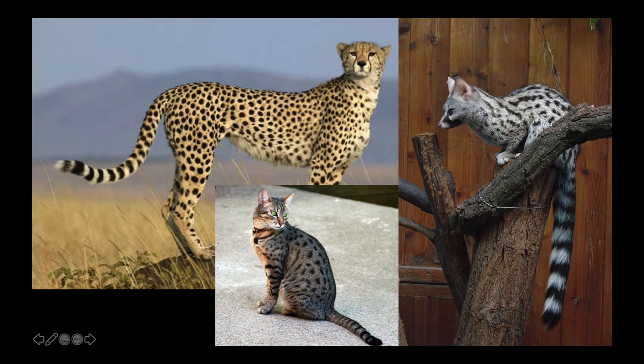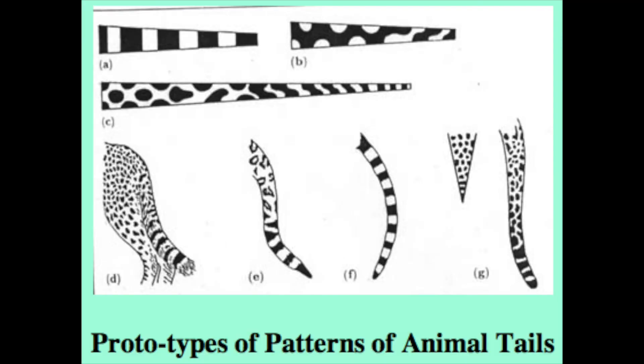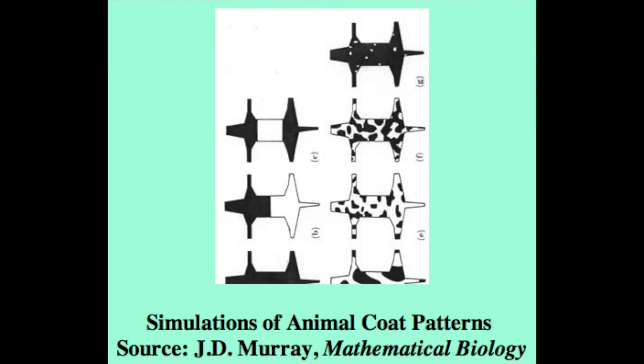But we never see the opposite. Here are the equations, called reaction-diffusion, which describe the competition between two substances: one which colors the skin, and one which inhibits this coloring.